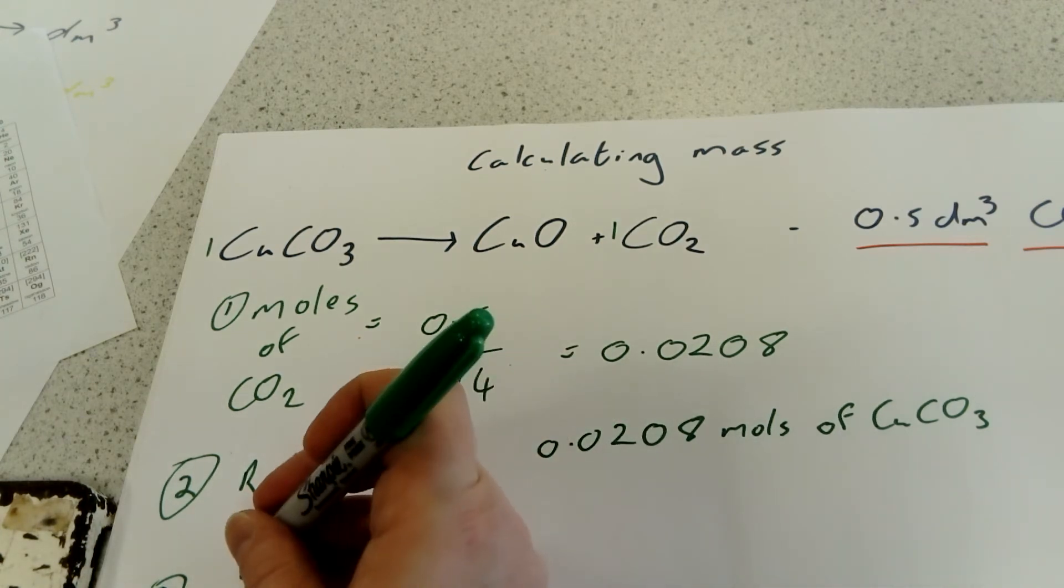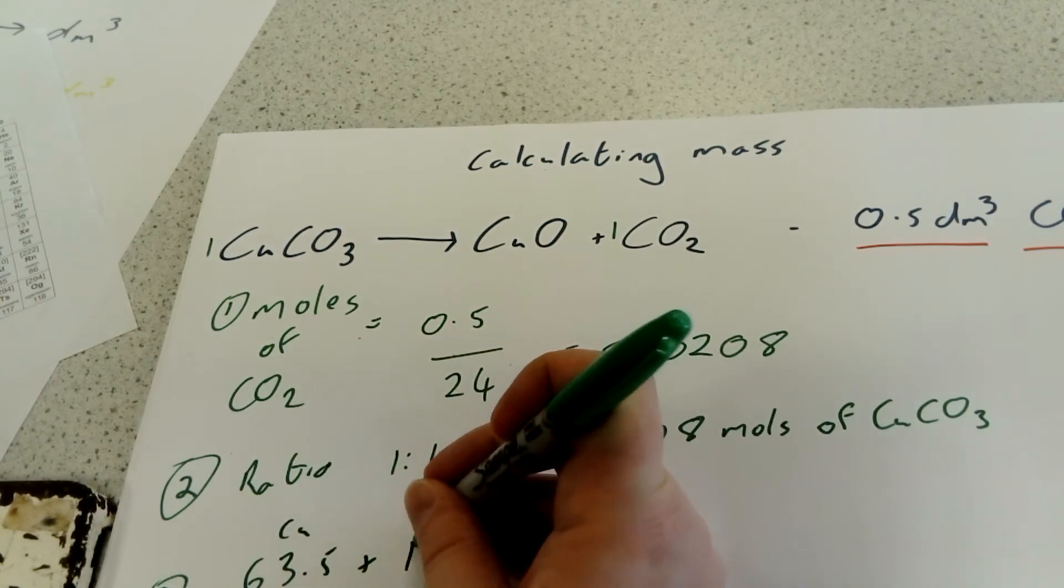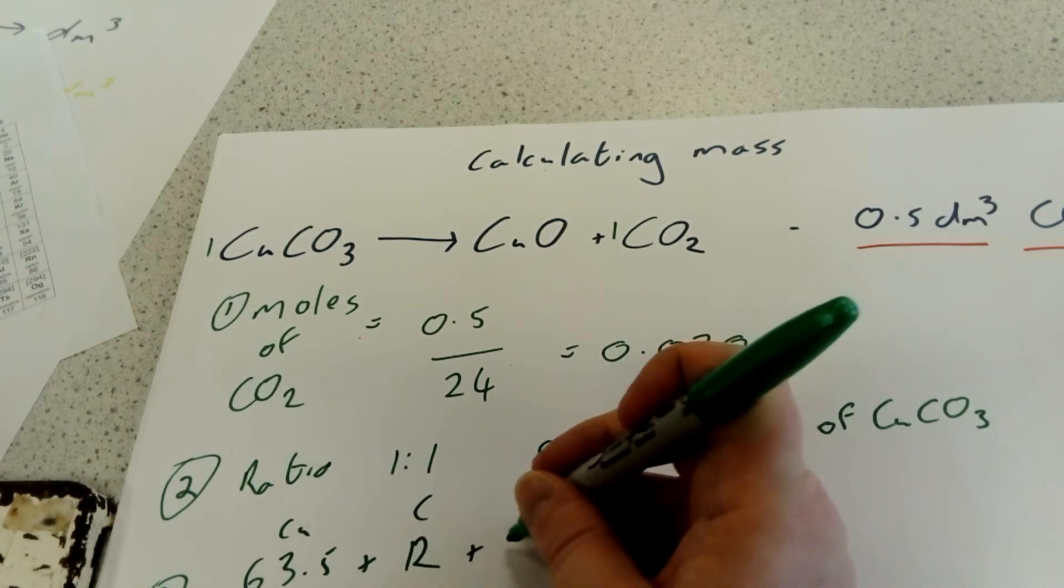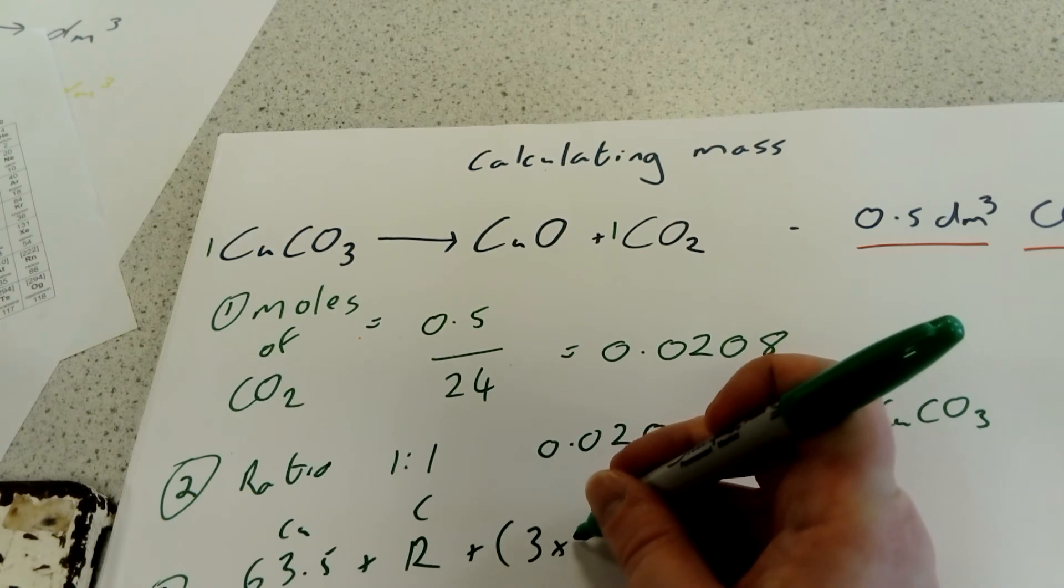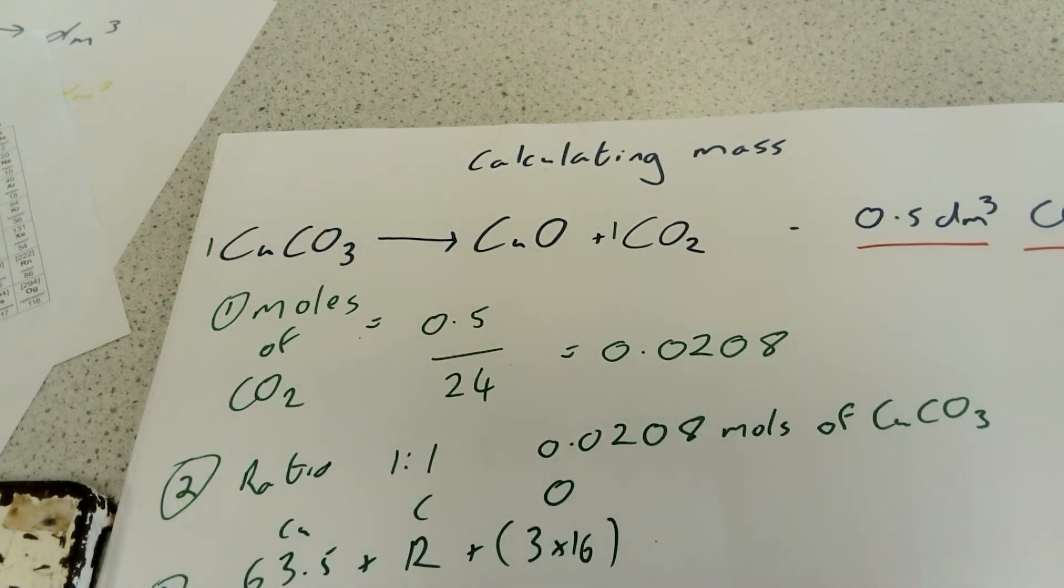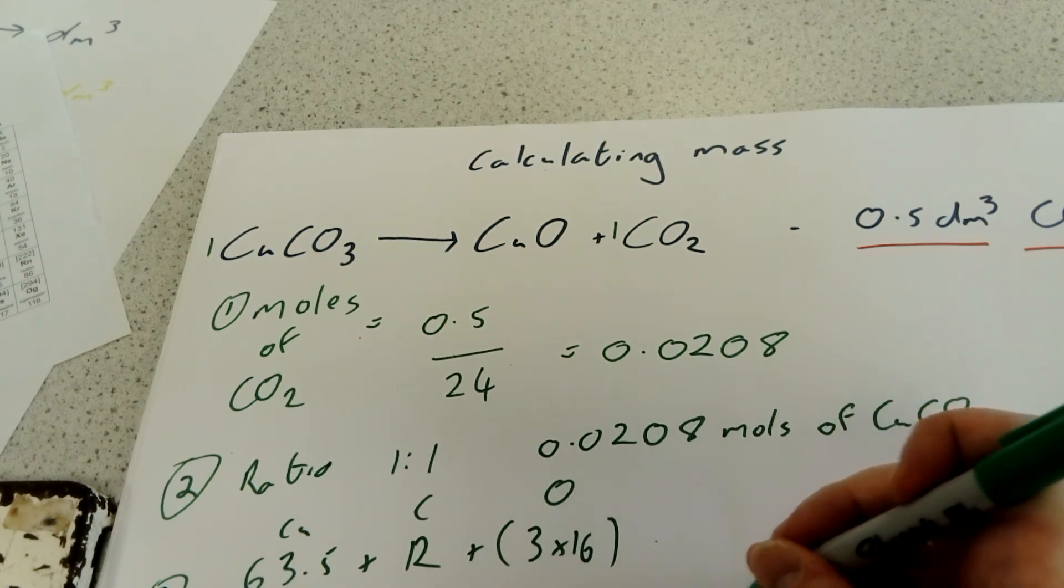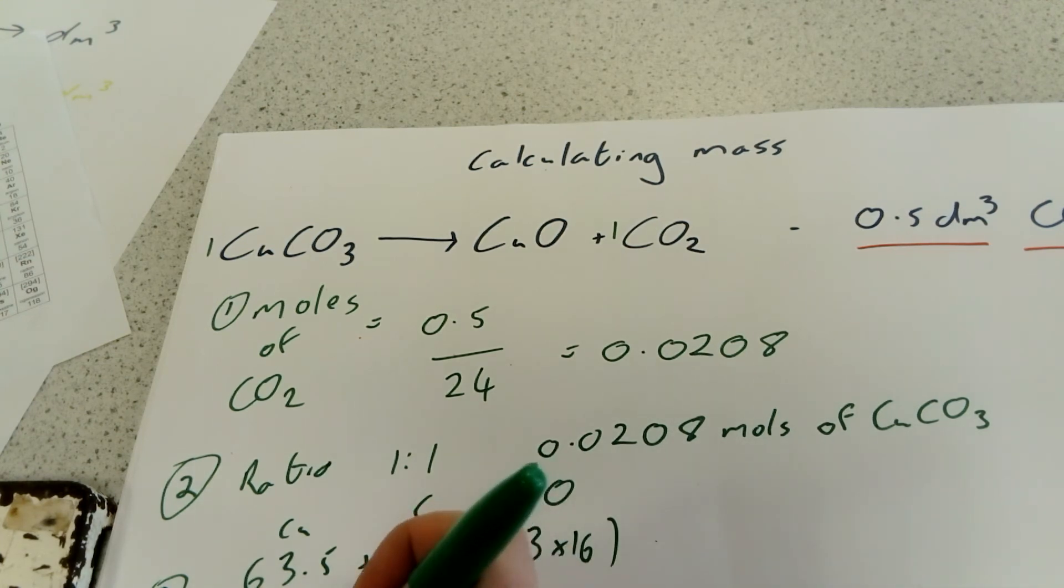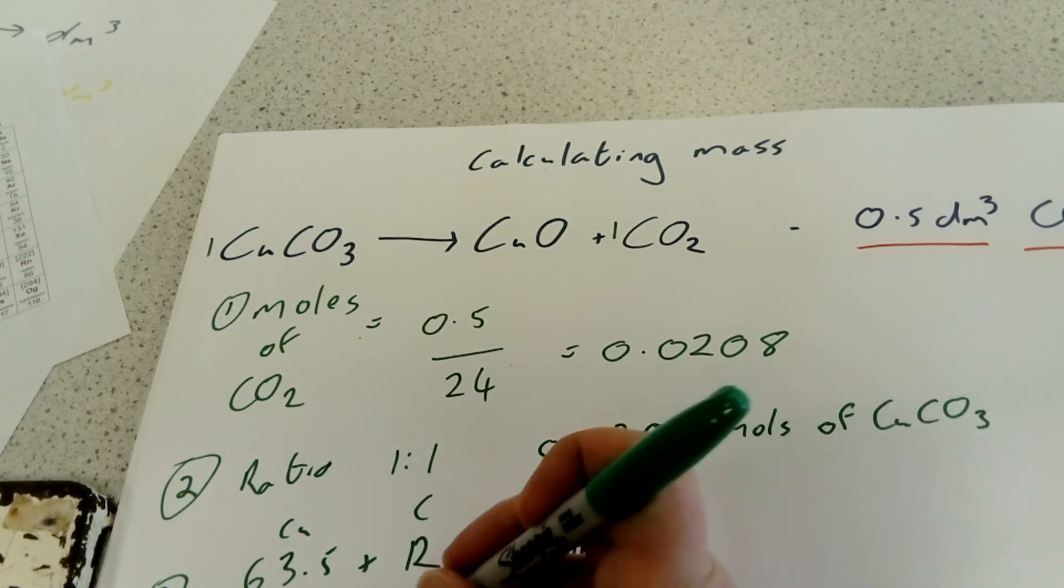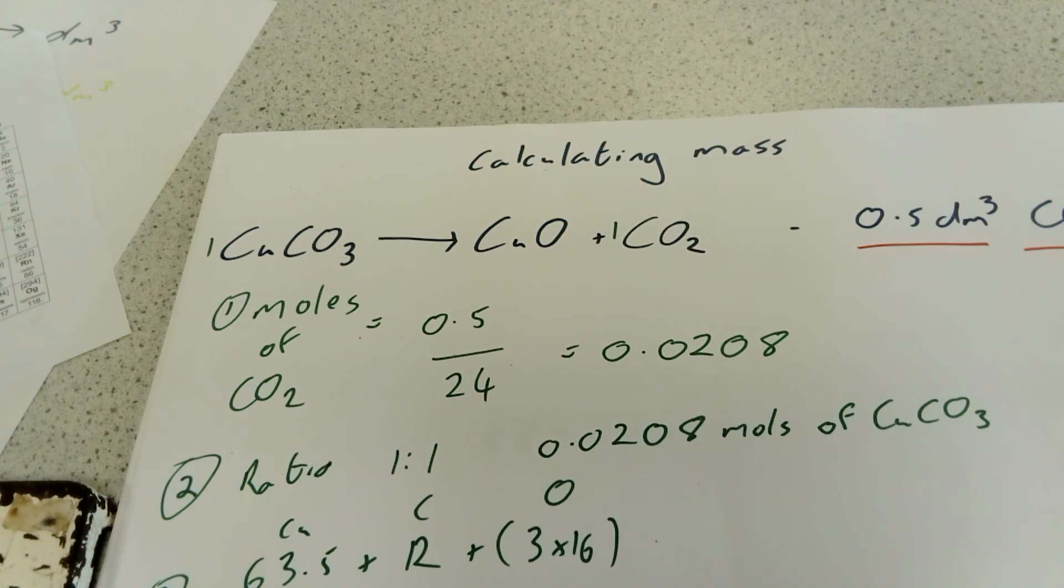That would be 63.5, which is copper. We're going to add to that 12, which is the carbon, then we'll add to that 3 times 16, which is our oxygen. So one mole of copper carbonate weighs 123.5. If we're working out how much we would need, we'll times that by the number of moles we've got, which is 0.0208.